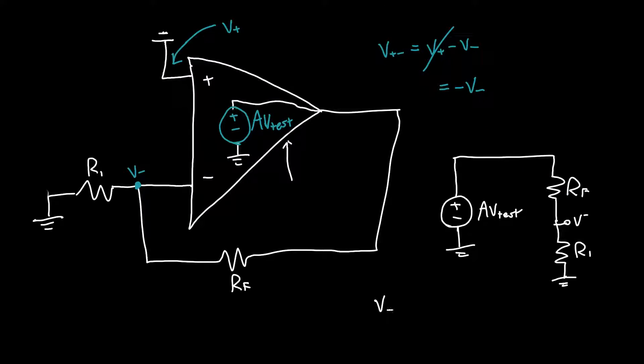We can calculate V minus. I apologize, I seem to have switched the location of the subscripts. Let me just undo that real quick. V minus is just A V test, the voltage, times R1 over R1 plus RF. You'll start to notice how absurdly useful voltage dividers are when calculating things. The reason we can do that is because this terminal is no longer affecting anything because we've replaced the dependent source with an independent one.